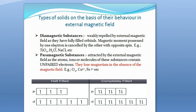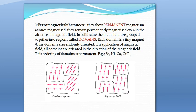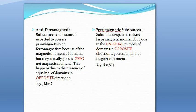Now we start the types of solids based on their behavior in an external magnetic field. On the basis of how solids behave in the presence of an external magnetic field, we classify them into various categories: diamagnetic, paramagnetic, ferromagnetic, antiferromagnetic, and ferrimagnetic substances.